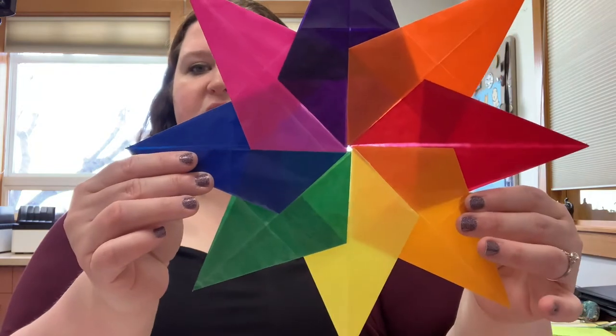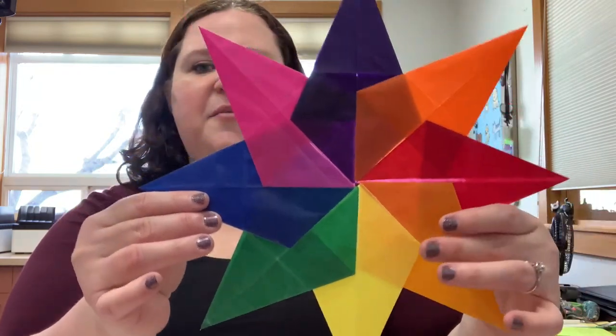And then our final product looks like this. This is our Waldorf star, our sun catcher, and they're beautiful when you hang them in the window. So let's get started and I'll show you how to make this project.